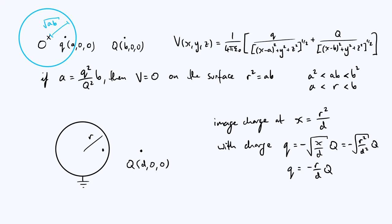As for finding the electric field: outside the sphere it is completely equivalent to the superposition of the original charge and its image charge — essentially two Coulomb-like electric fields. I won't write out the full expression as it involves many parameters, but you can see a diagram of how the field looks in the thumbnail of the video.